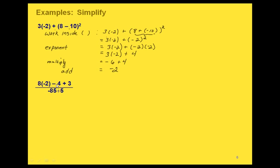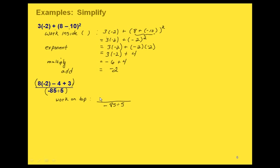Now we have one with a fraction bar. Remember, we think of the fraction bar as a grouping symbol, which means we have to work on the top of the fraction bar and simplify there, and work on the bottom of the fraction bar and simplify there, before we can do anything else. Let's start with the top of the fraction bar. Looking at what's on top, we have a multiplication, a subtraction, and an addition. The first thing to do is the multiplication: 8 times negative 2 gives us negative 16.